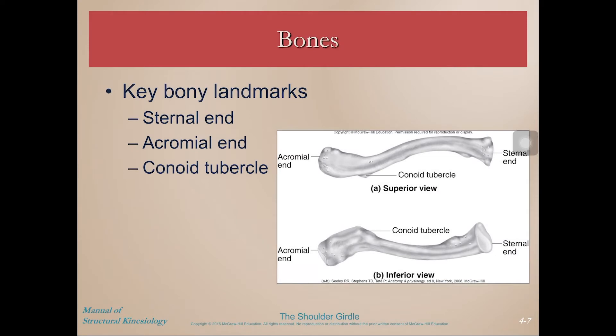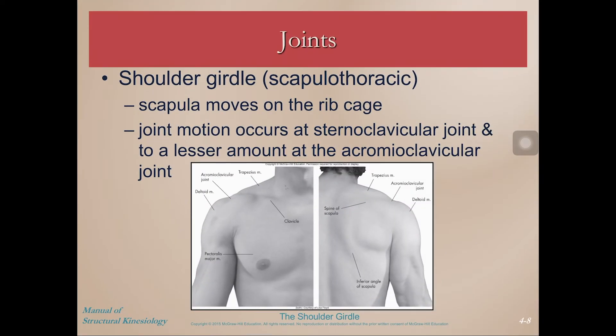On the clavicle, we have the sternal and acromial ends — the manubrium articulates here, and then there's the acromial end and the conoid tubercle. The shoulder girdle or scapulothoracic joint moves along the rib cage due to joint motion at the sternoclavicular (SC) and acromioclavicular (AC) joints. That movement allows the glenoid fossa to reposition to allow the humerus greater range of motion. Without the repositioning of our glenoid fossa, the shoulder joint would have limited range of motion — we can only abduct to about 90 degrees, and any further range of motion requires the scapula to reposition to allow the humerus to continue to move.